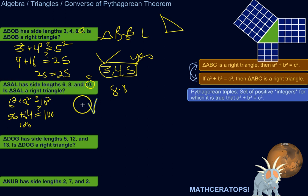So yes, this triangle SAL is a right triangle. And if you notice something, see these side lengths, 6, 8, 10? That's 3, 4, 5 times 2. So this triangle is proportional to the first one. So of course it's going to be a right triangle. It's just scaled up by a factor of 2.